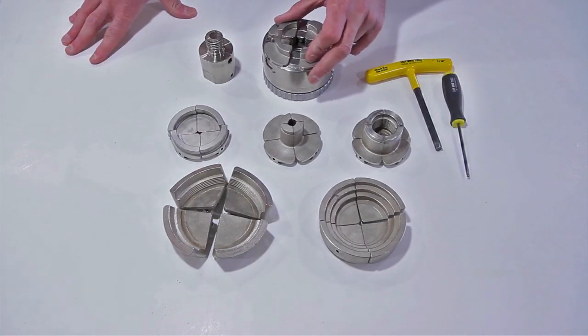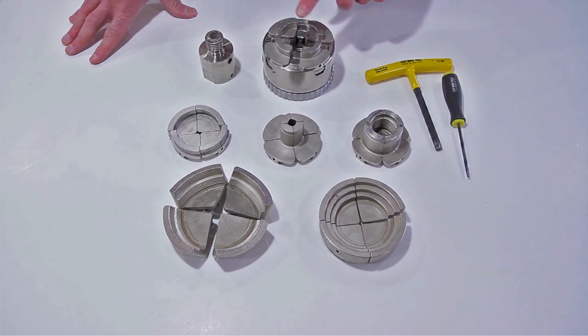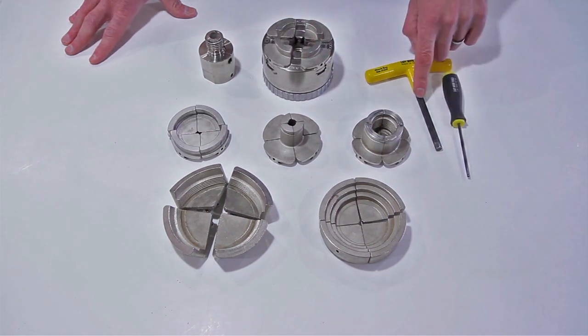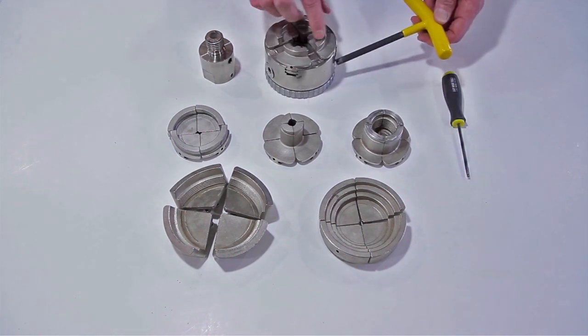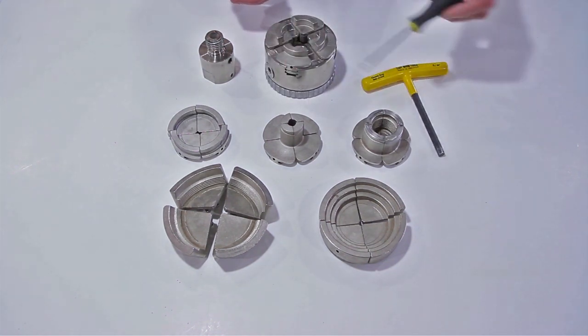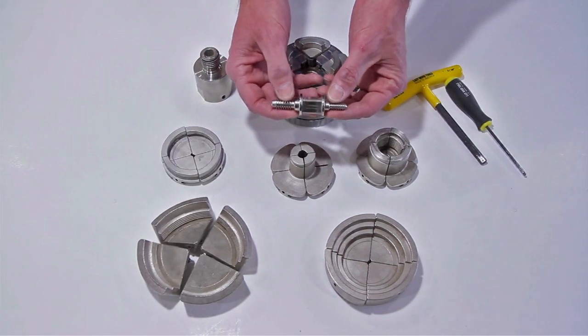Okay, this is the Easy Wood Chuck. It comes with a standard set of jaws that are 1⅜ inches and opens up to 2 inches. It also comes with two wrenches. This one is to loosen and tighten the jaws and grab on your workpiece, and this is to release them.